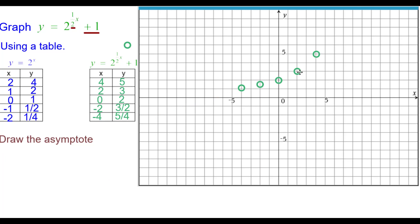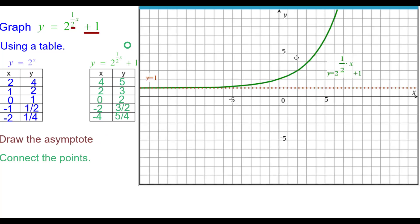We need to draw the asymptote. And it seems to be flattening out here at y equals positive 1. So we'll draw in that horizontal boundary line and connect the points to get that easy chair look, that 2 to the x look. Compare it to the parent function.